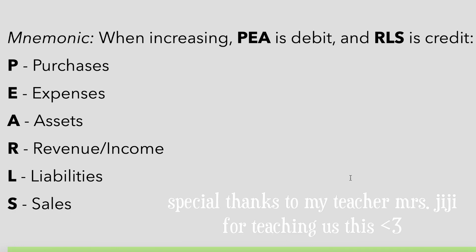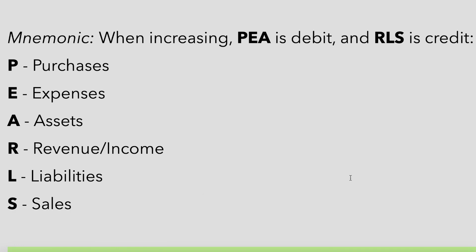Now that we've looked at capital, assets, and liabilities, here's a mnemonic to help you remember what to debit and credit. The mnemonic is P-E-A-R-L-S, or simply 'PEARLS.' P for purchases, E for expenses, A for assets, R for revenue/income, L for liabilities, and S for sales. By breaking it into two parts — PEA and RLS — you can easily remember what items need to be debited and credited when they're increasing.